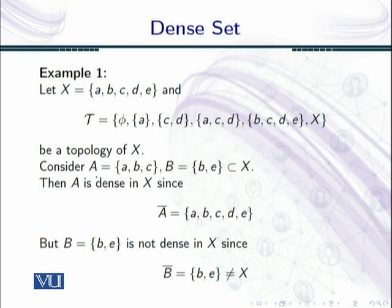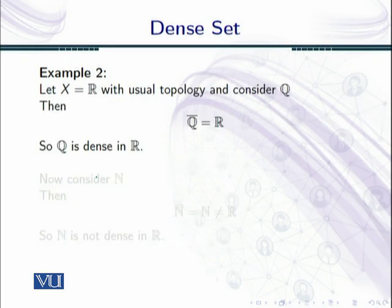If you look at the set B, the closure of B is the same as the set B because there is no element other than b and e that is a closure point of B. That's why the closure of B equals {b, e}, and that is not equal to X. So according to the definition of a dense set, the set B is not dense in X.